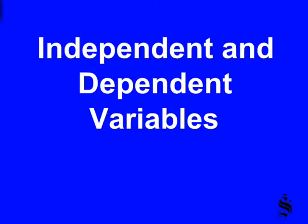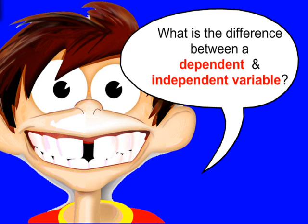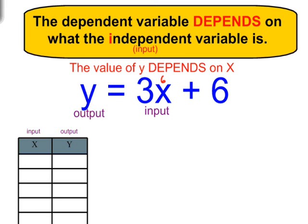Independent and Dependent Variables. What's the difference between a dependent and an independent variable? Well, this is pretty easy. If you have an equation with two variables — we have y and x — the value of y depends on the value of x. So y is your dependent variable, because it depends on what our value of x is.